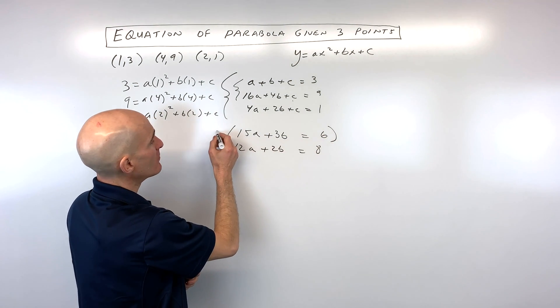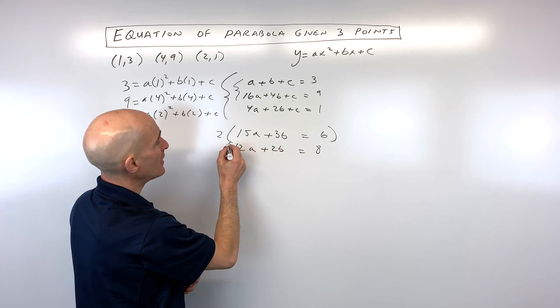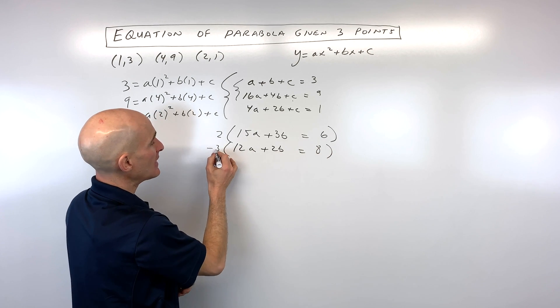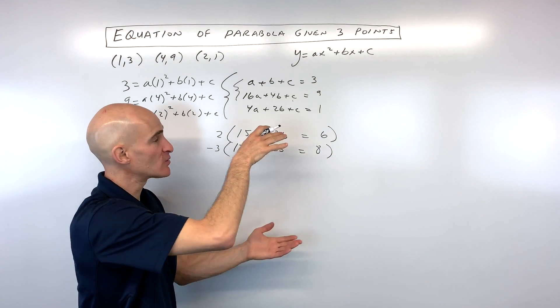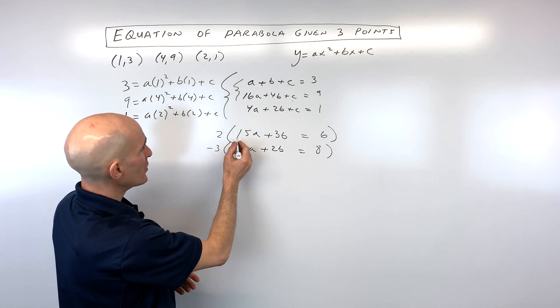Let me multiply this top equation by 2. That'll give us 6b. And the bottom equation will multiply by negative 3. That'll give us negative 6b. This way, when we add them together, the b's will cancel out. So let's go ahead and do that.